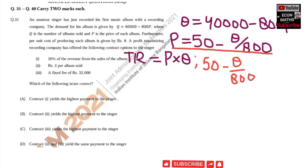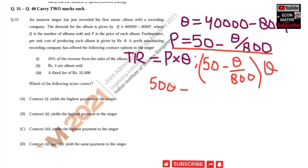Expanding this expression, total revenue equals 50Q − Q²/800. This is our total revenue function.